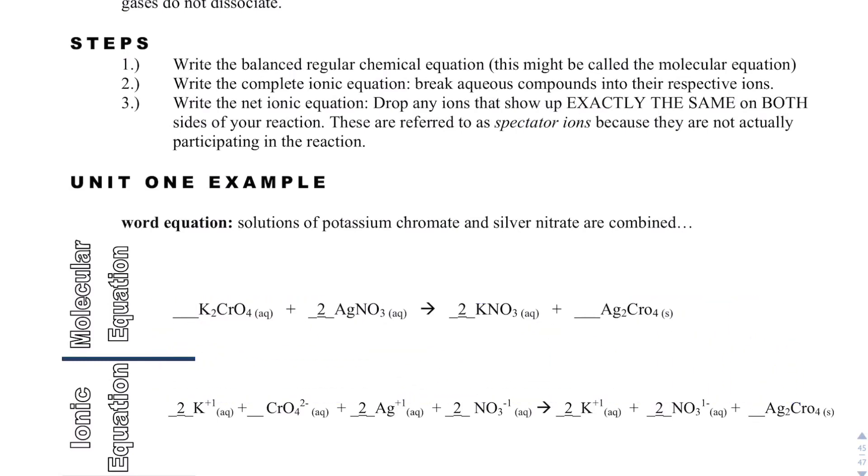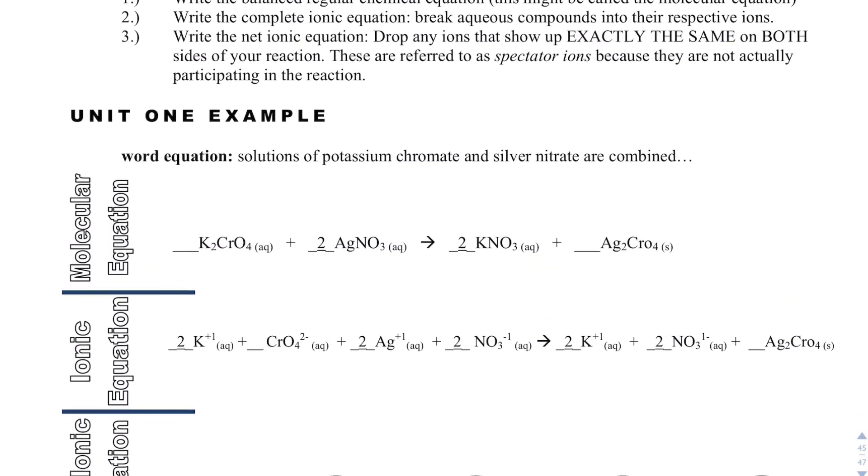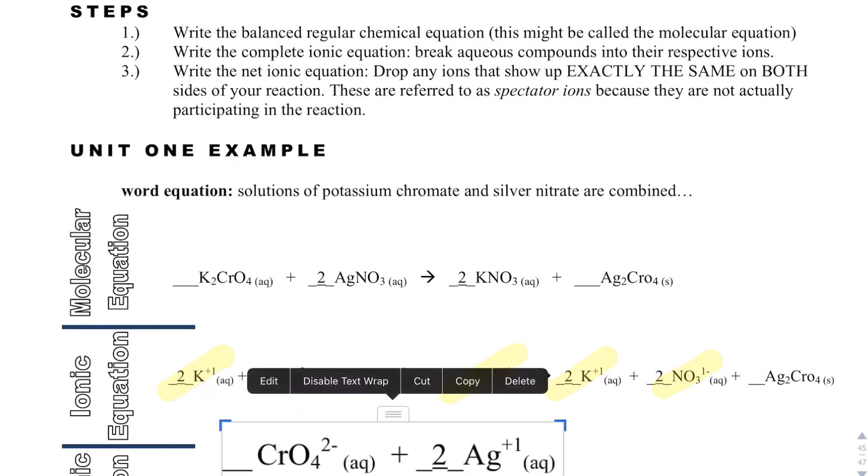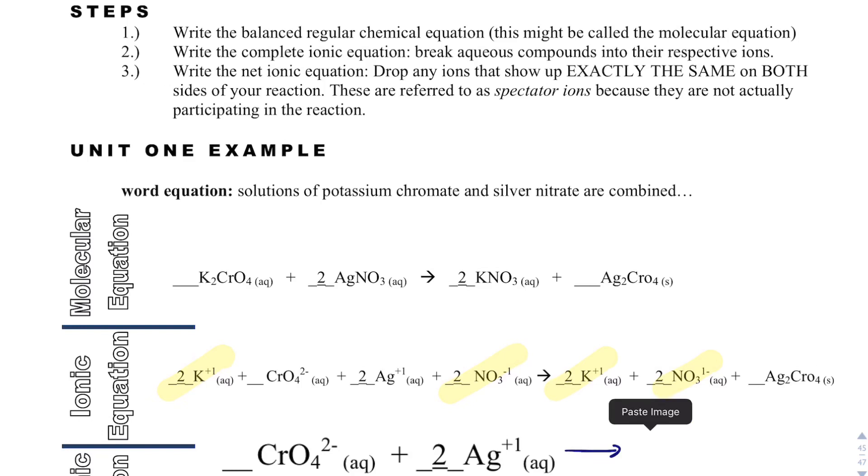And what we do to figure out the net ionic equation is we just look at the ionic equation and see what can cancel on each side. And so, this is all that cancels, and so what I'm left with for my net ionic equation is just chromate plus two silvers forming silver chromate, and that is it.